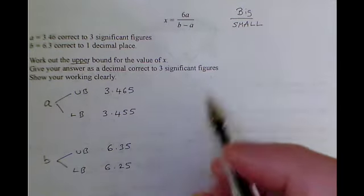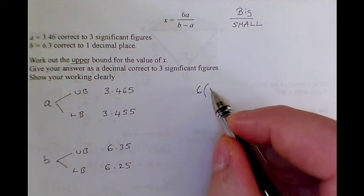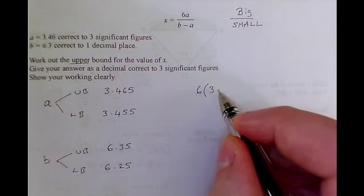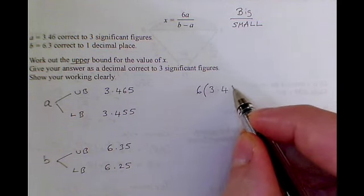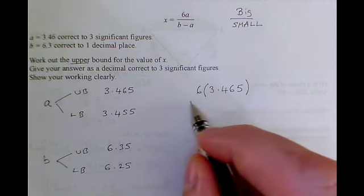Okay, so to make this x value as big as possible, we want the biggest possible value in the numerator, and the biggest value for A is 3.465, so I want 6 of those. Now, how am I going to make this denominator to be as small as possible?